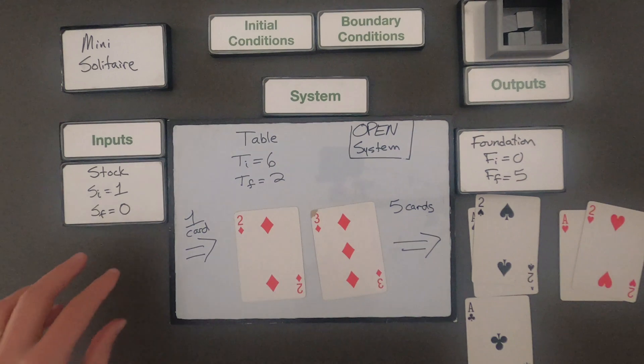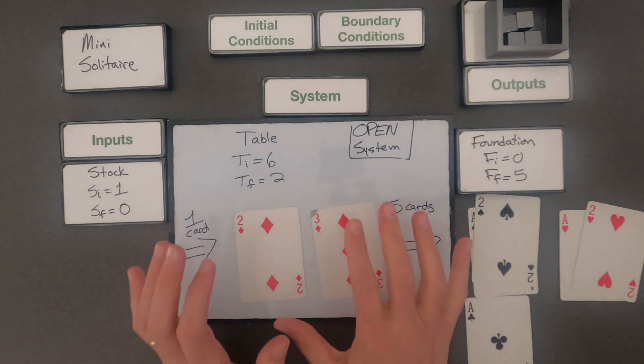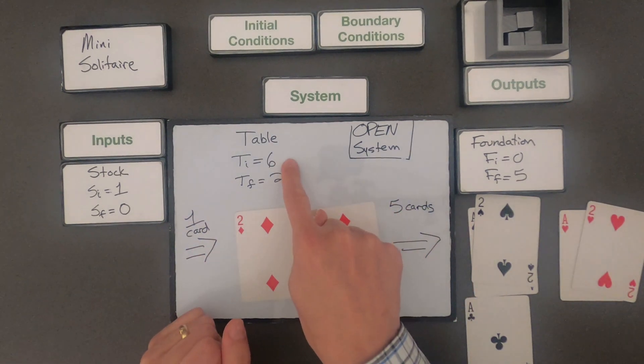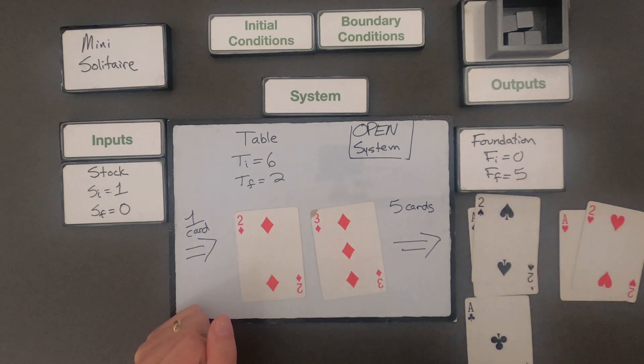So we can see that by changing our initial conditions even though the cards in the system were six at the beginning we got a way smaller outcome at the end. And so those are boundary and initial conditions.